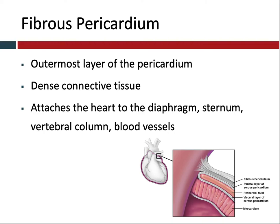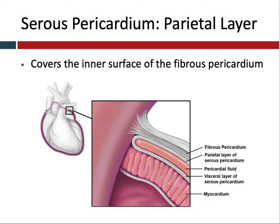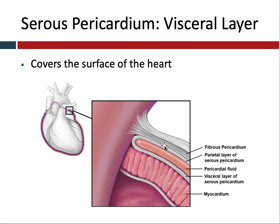The serous pericardium is actually made up of two layers with fluid in the middle, like other serous membranes. The parietal layer is right here and covers the surface of the fibrous pericardium, lining just the inside of that fibrous pericardium. The serous pericardium's visceral layer is attached to the heart wall itself. You have the visceral layer, which then turns into the parietal layer, and in between we're going to have fluid.